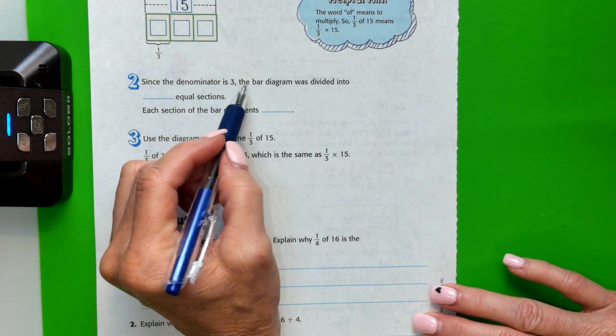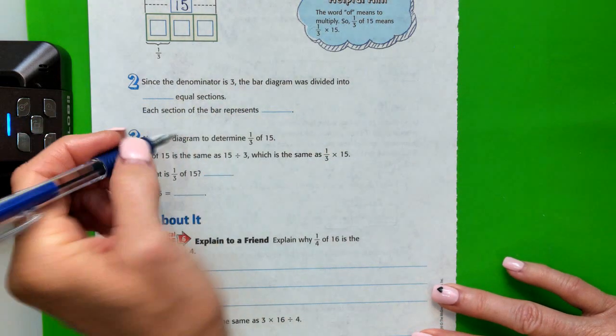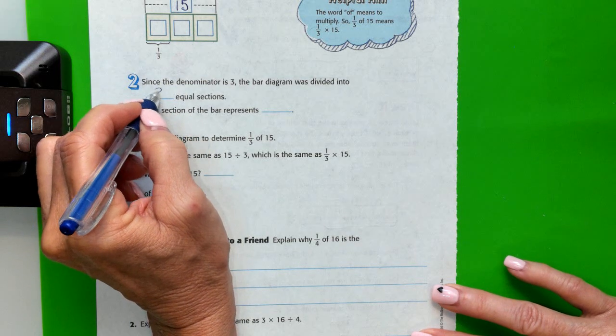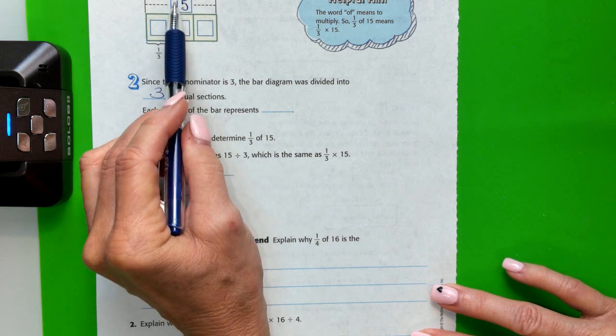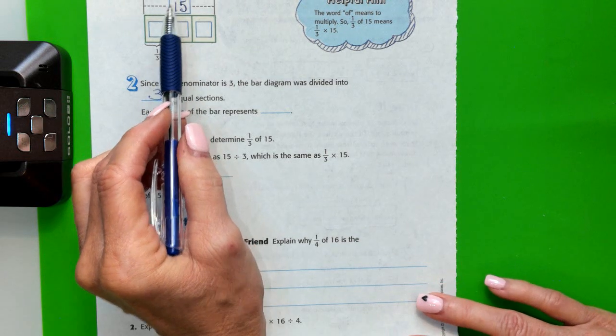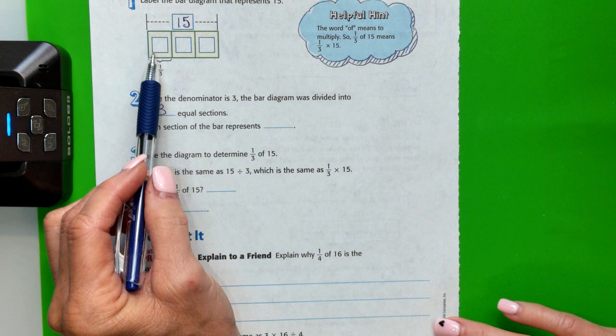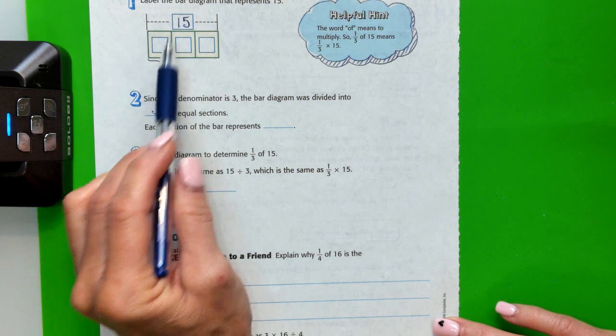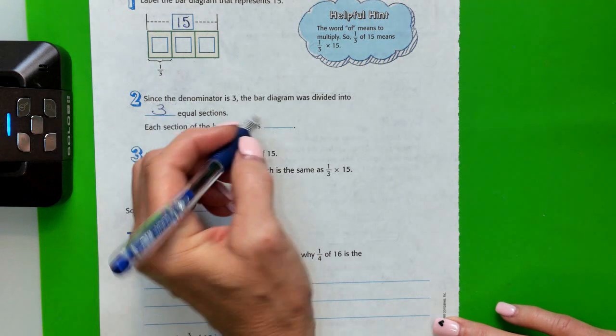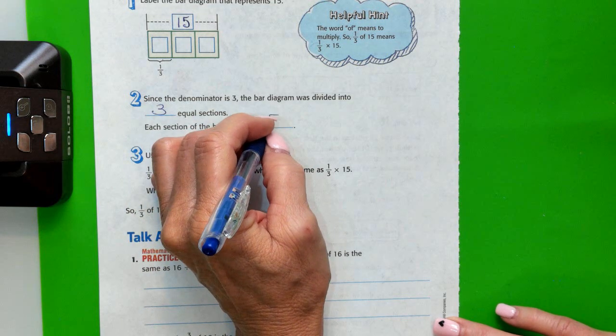Since the denominator is 3, the bar diagram was divided into how many equal sections? You're right, 3. So each section of the bar diagram represents, because remember, it has to total 15. So each section is how many? Well, 3 goes into 15 5 times. So each section represents 5.